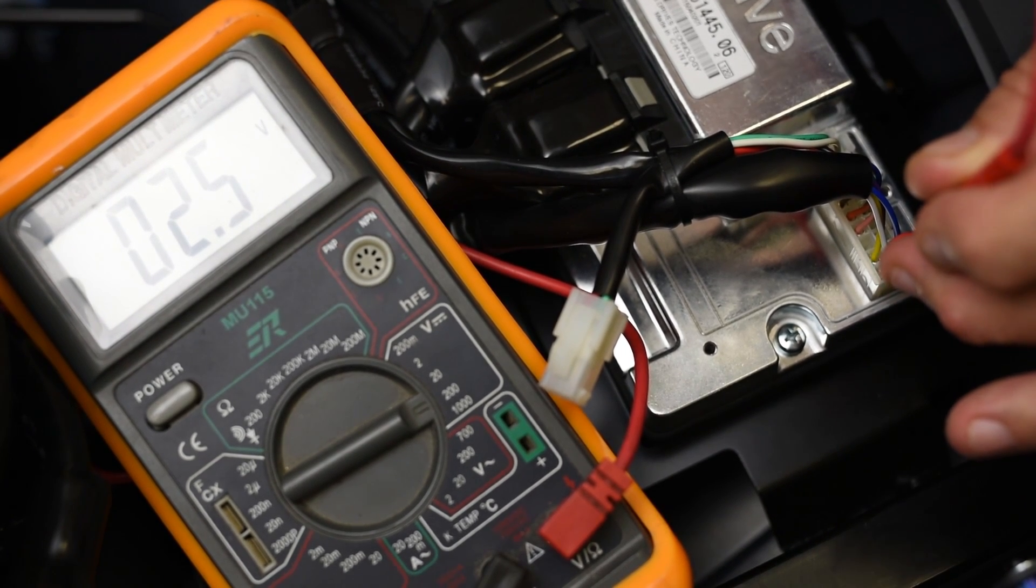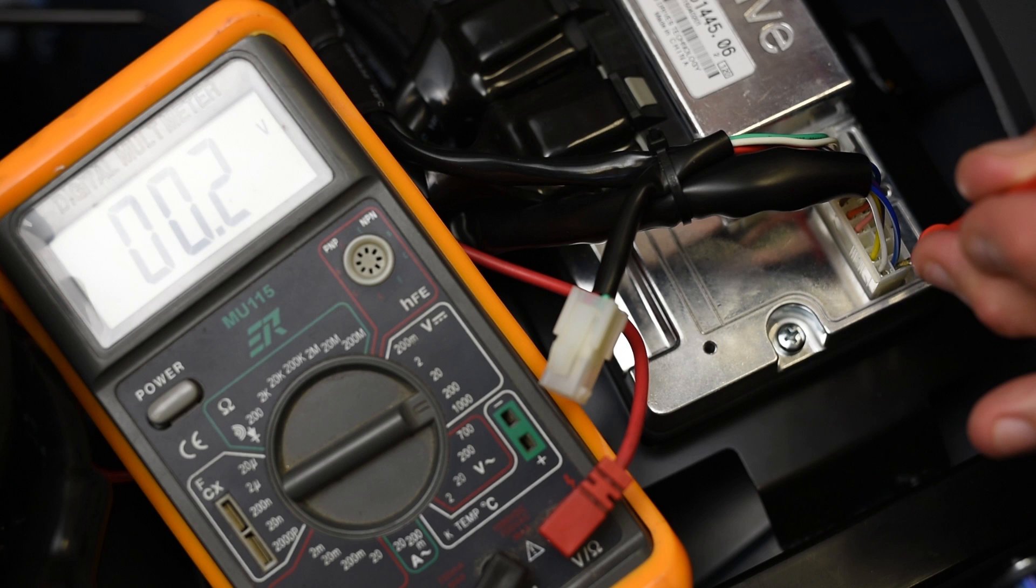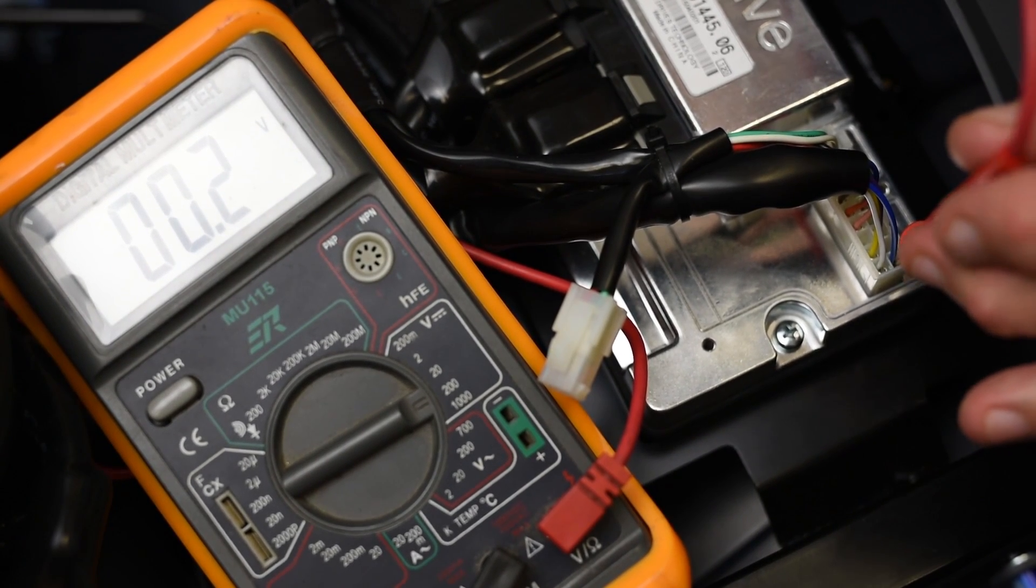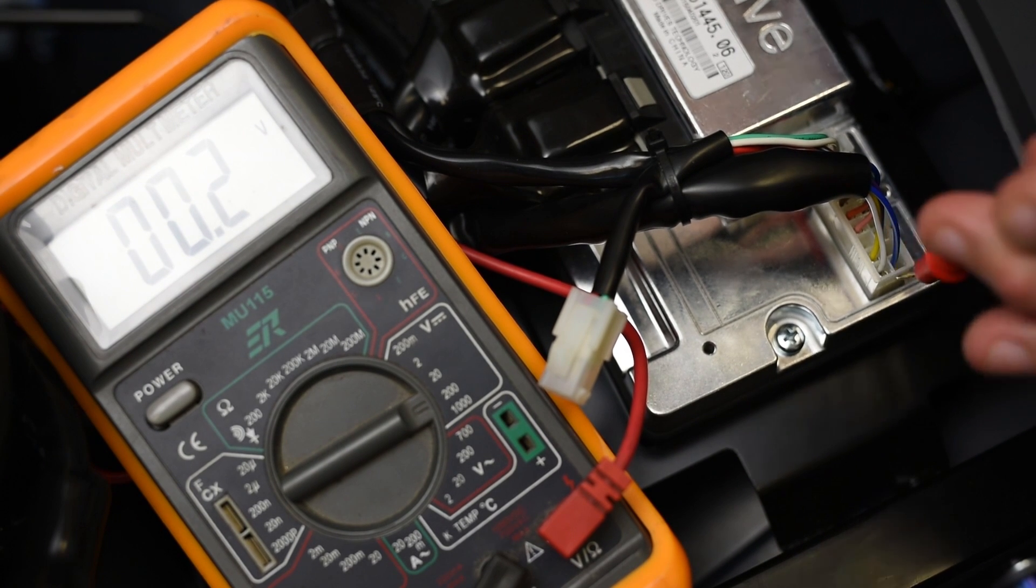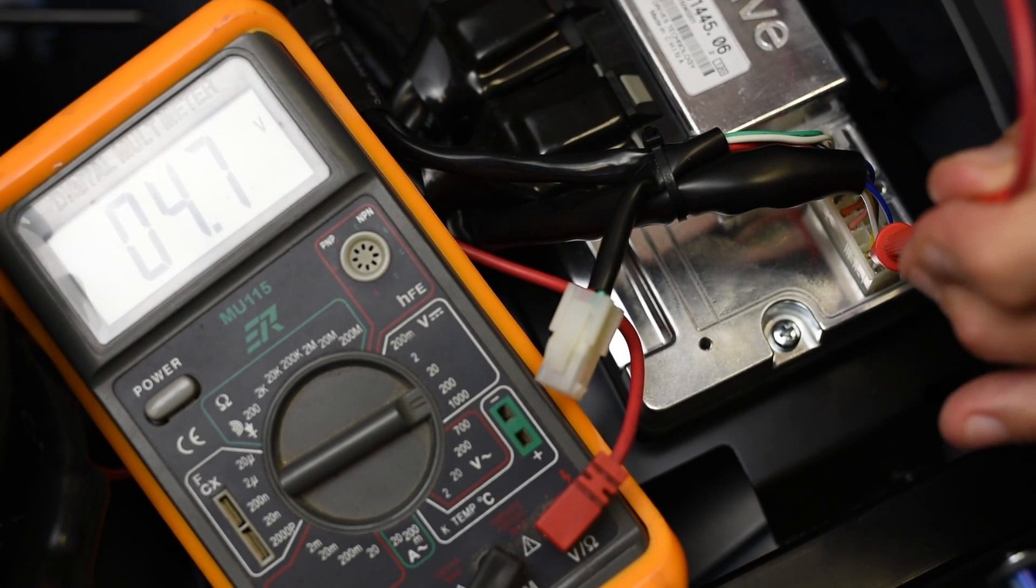Now we want to check the low side, and we should get around 0.2, 0.3 volts, and that should show us that that's good. Now we go to the high side, and we should see around 4.7, and we do.